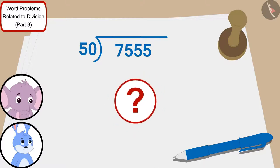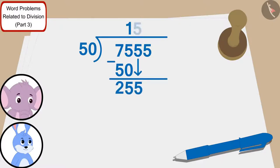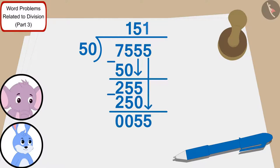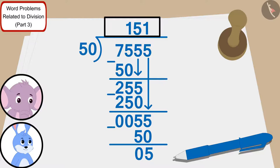If you wish to, you can solve it by pausing the video. We can divide 7555 by 50 in this way. Bunni and Appu will be able to distribute Rs. 50 to 151 poor villagers with the amount they won.